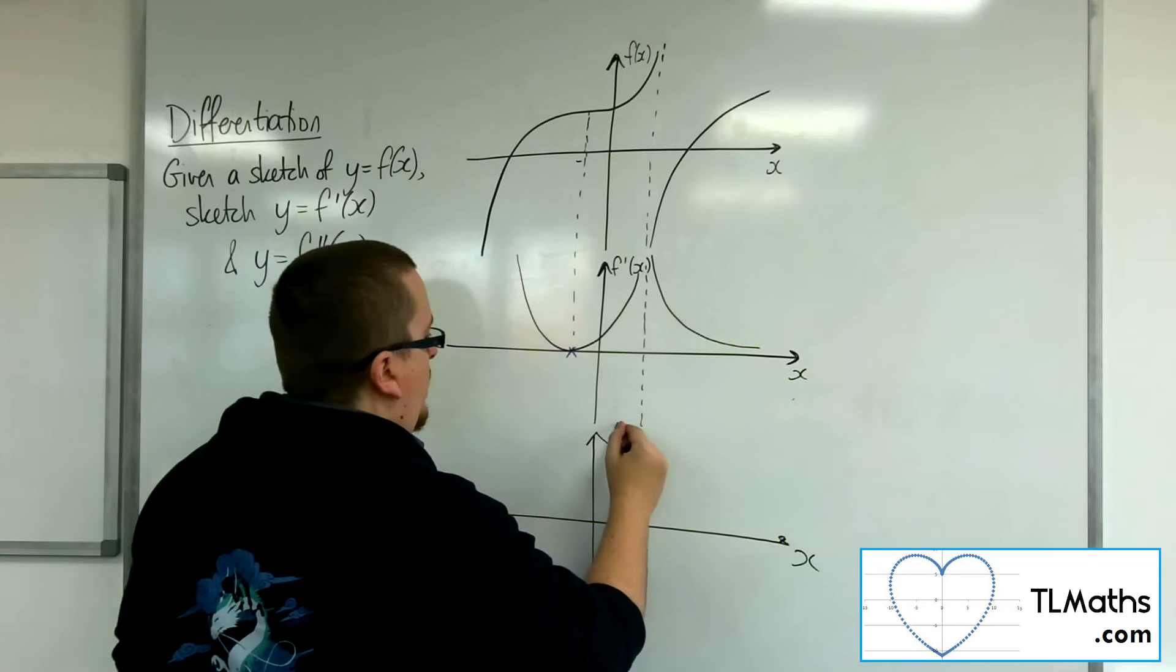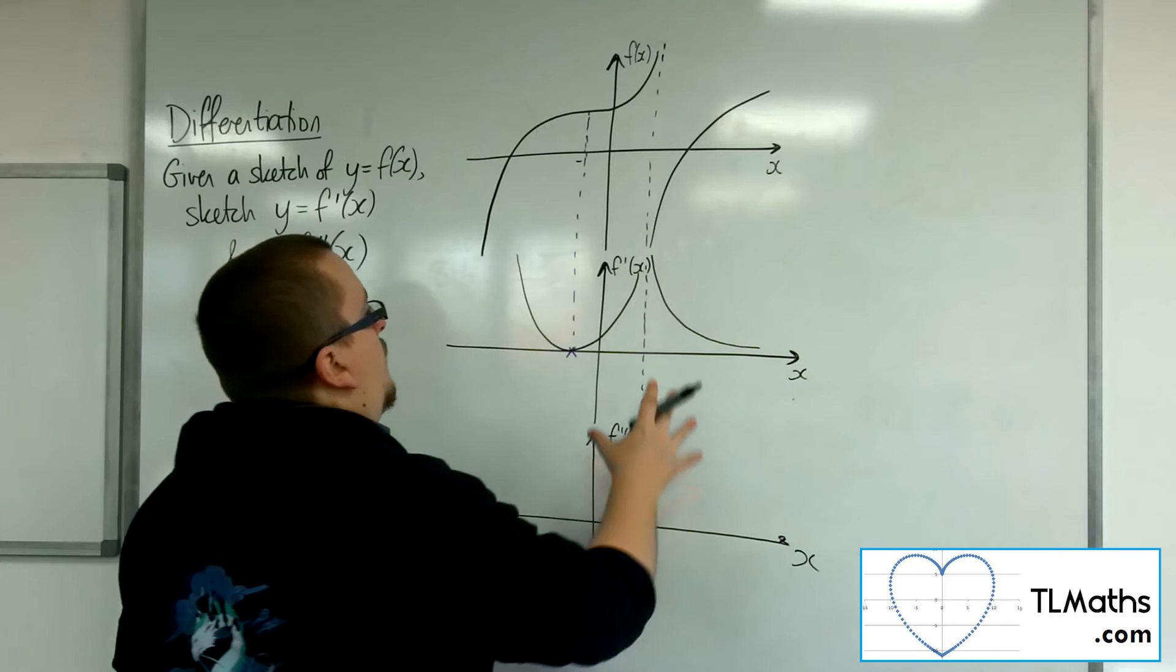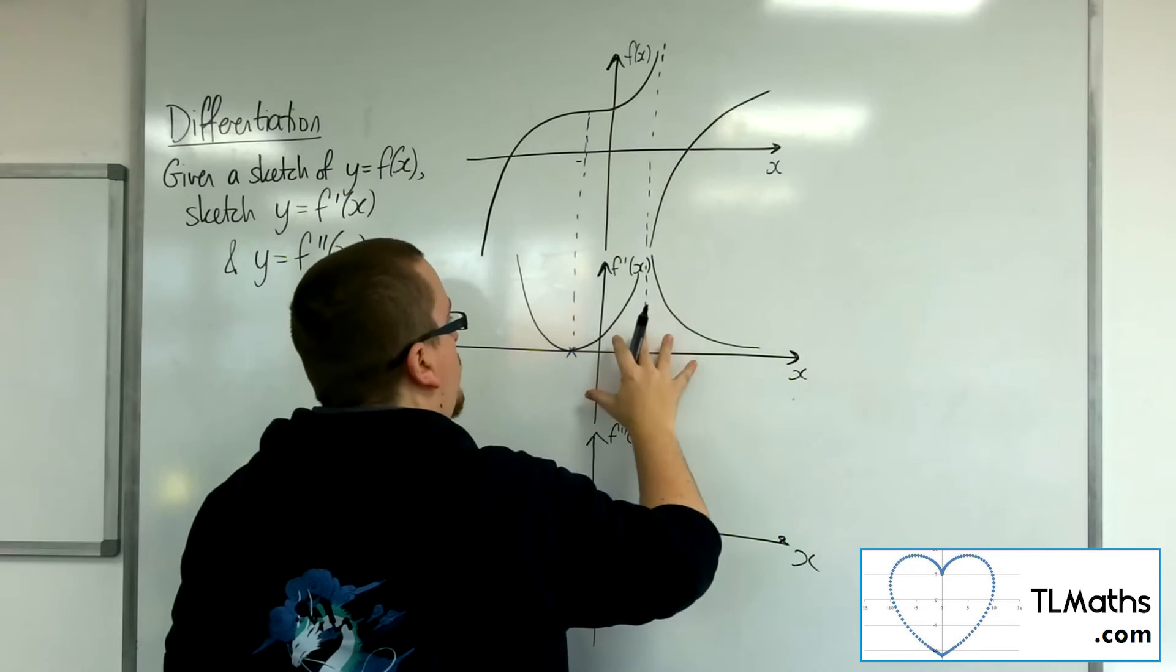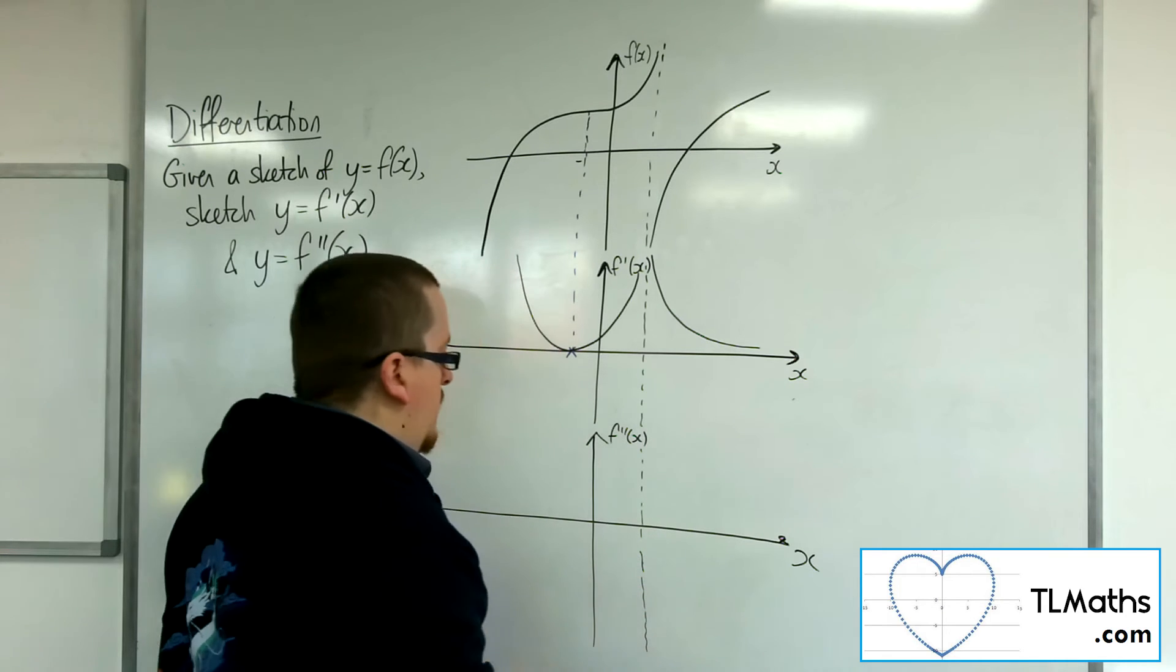So let's have a look at the second derivative, the gradient function of the gradient function. Well, if this one carried through the asymptote, then this one carries through the asymptote as well.